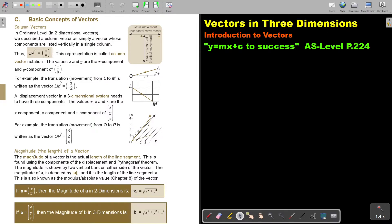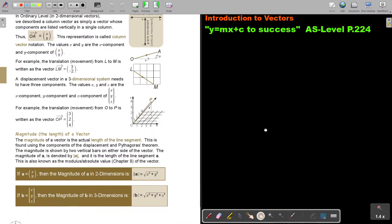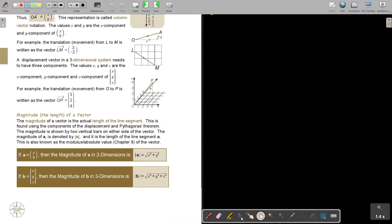Now the other thing, the magnitude, the length of a vector. Let's look at that. We also did this in ordinary level. The magnitude of a vector is the actual length of the line segment, how long it is. This is found using the components of the displacement and Pythagoras theorem.